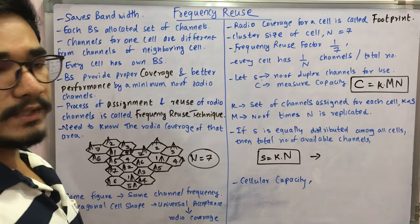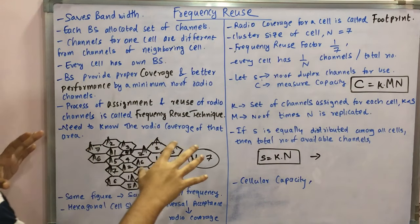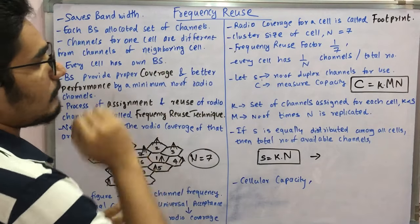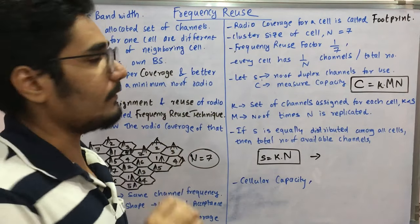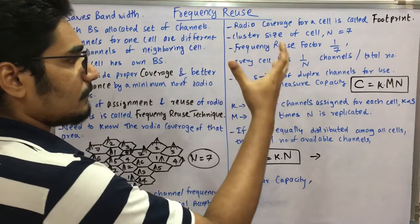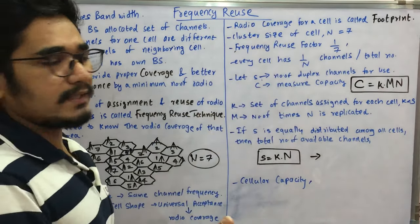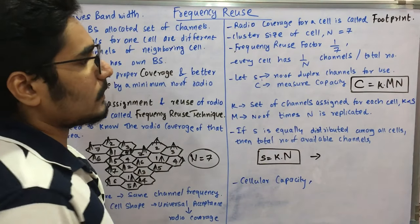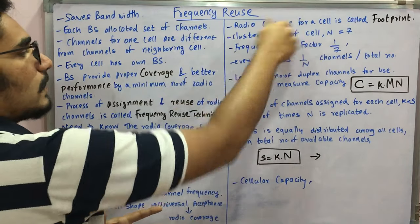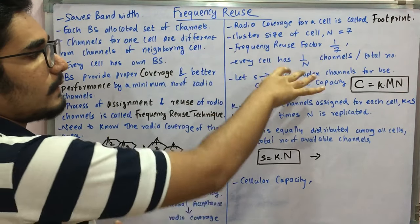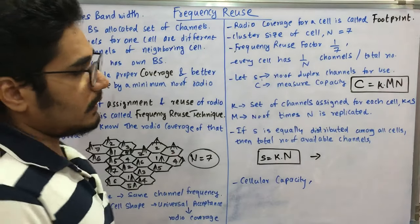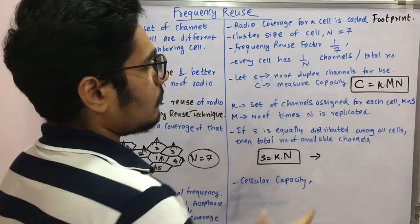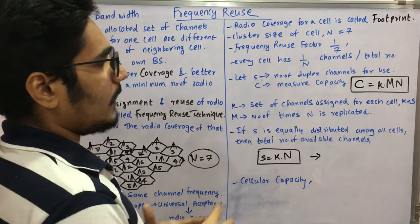Now let's look at some mathematical equations. We have cells numbered one to seven, so the cluster size n equals seven. The frequency reuse factor is given by one over n, which is one-seventh — it's a dimensionless ratio. This comes from the fact that every cell has one-over-n channels out of the total number of channels available. Now let's calculate the cellular capacity for a particular area.